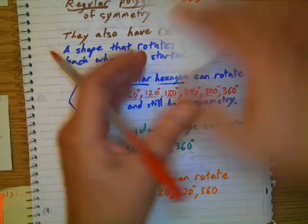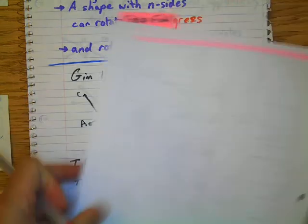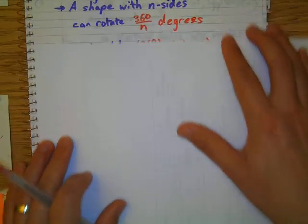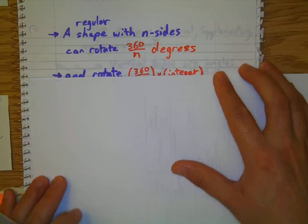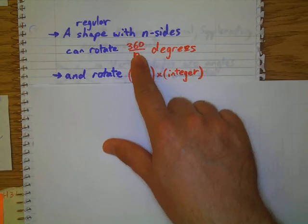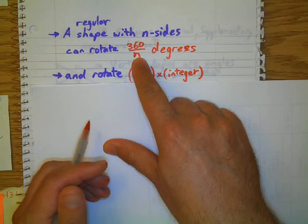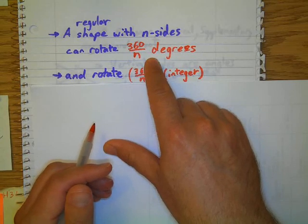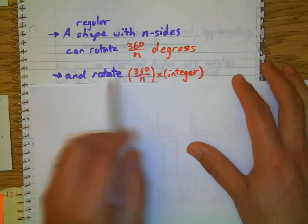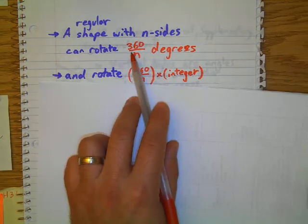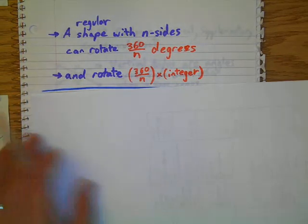So that leads up to developing a formula. Having a regular shape with n number of sides, I could rotate it 360 divided by n to get the degrees to rotate. And then I can multiply that by an integer. So let's look back at our examples here.